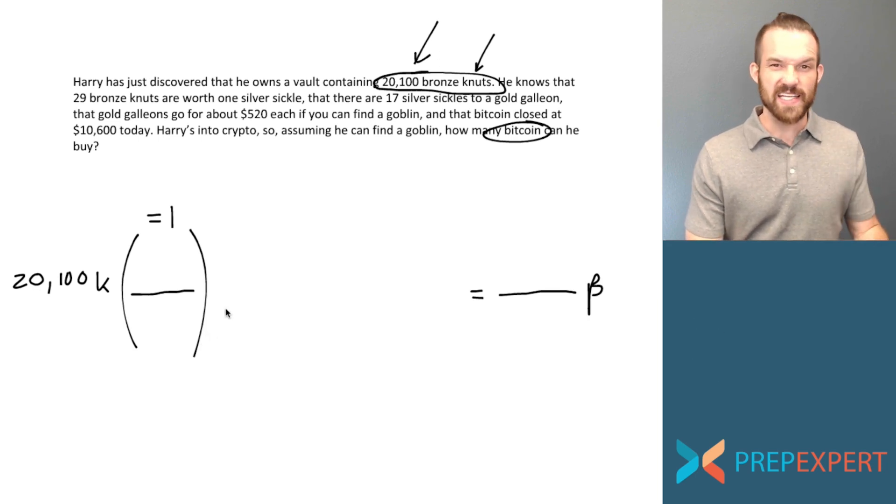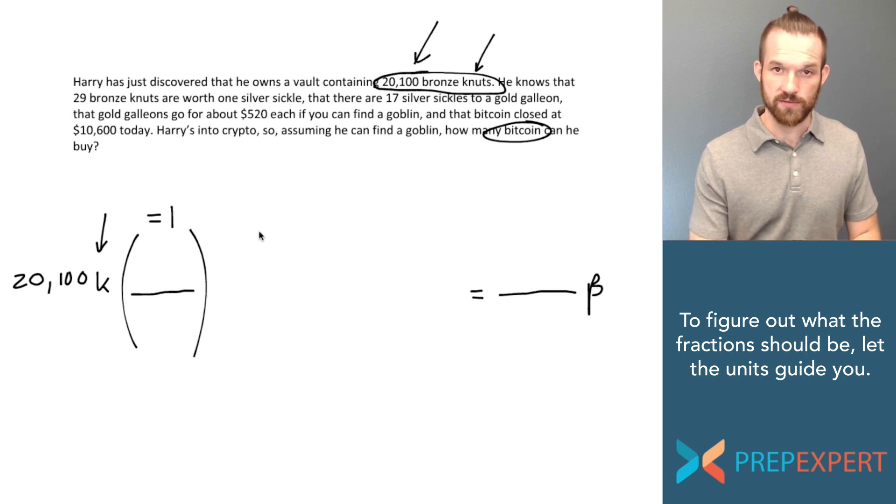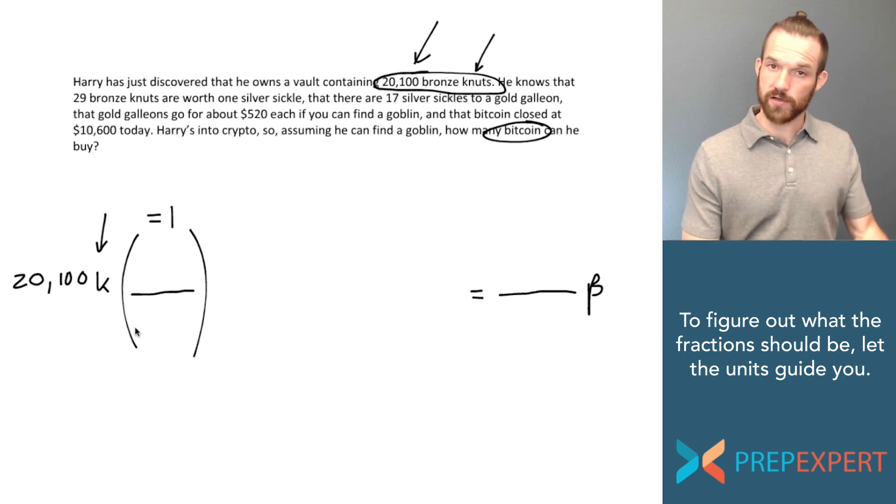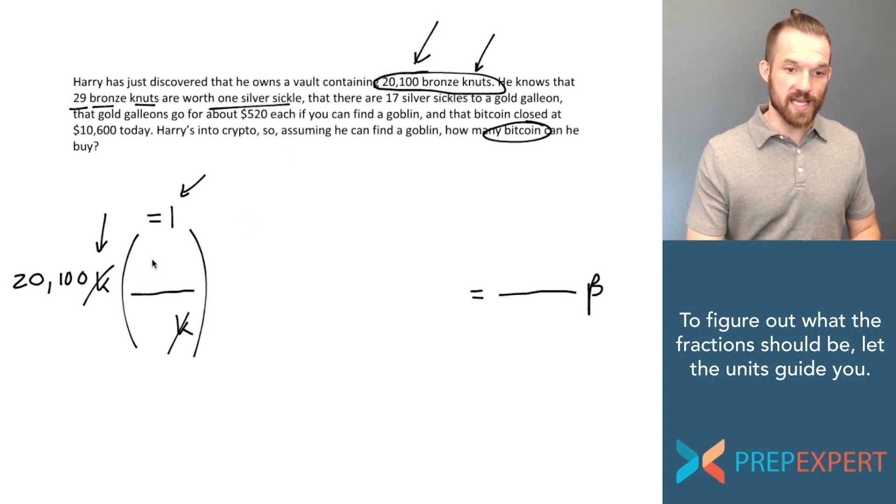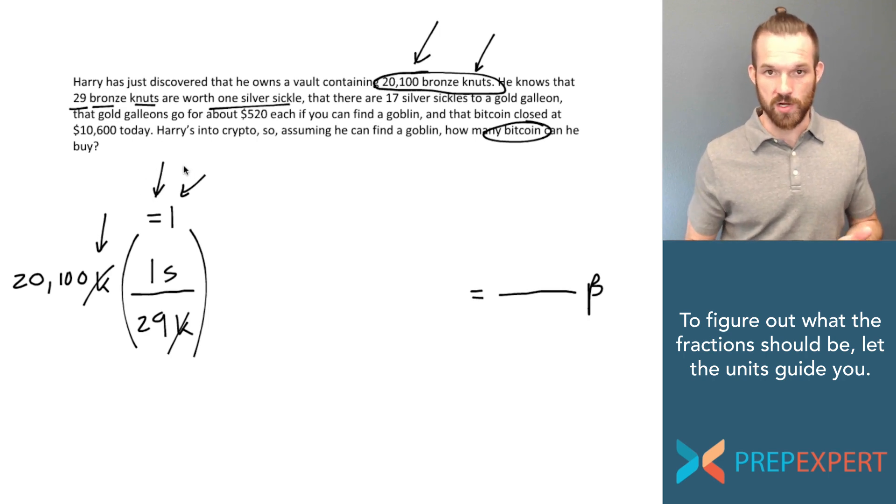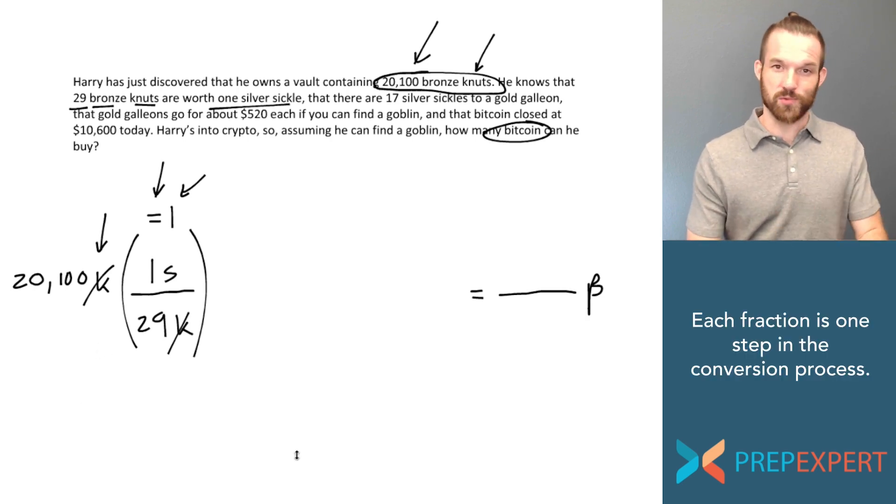So every ratio that I multiply by should be equal to one. How should we build the ratios? We're just gonna let our units guide us. So right now in the quantity that we start with what units do we have? We have bronze nuts. Do I want bronze nuts in my answer? No I don't. So how can I get rid of them? They're currently in the numerator so to get rid of them I'll just put them in the denominator and now they'll cancel. But what can I equate bronze nuts to? Well I know that 29 bronze nuts are worth one silver sickle. So I can say one silver sickle over 29 bronze nuts is equal to one. So I've successfully moved one step closer to the units I want.